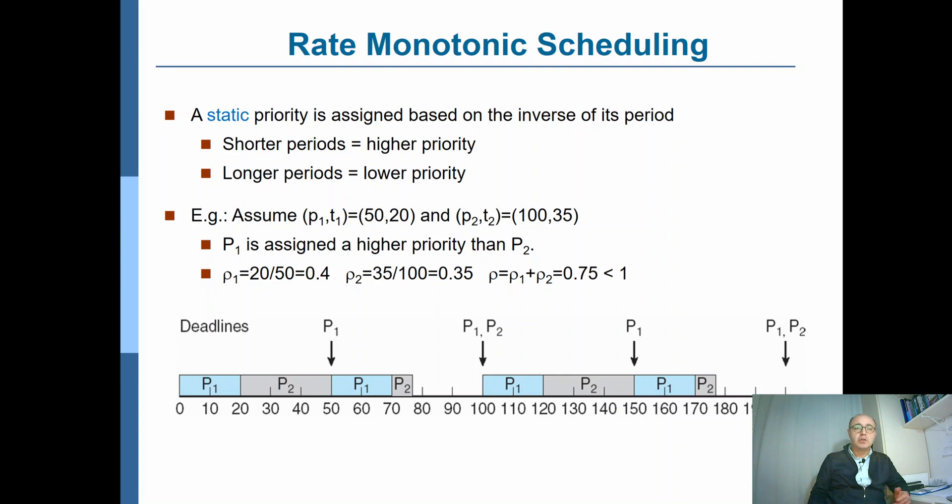Whereas a process with longer periods can tolerate delays. Therefore, it will have lower priority. So let's, for example, consider a system where we have two processes, P1 and P2.